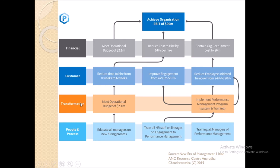Looking at the strategy map, you can see it is divided into financial, customer, transformation, and people-and-processes areas — each with its own departmental goals. For example, to achieve earnings before interest and taxes of 90 million dollars, you can work through these functional areas: meeting the operational budget, educating managers on new hiring processes, reducing time to hire from eight to six weeks, and reducing the cost per hire by 14 percent.